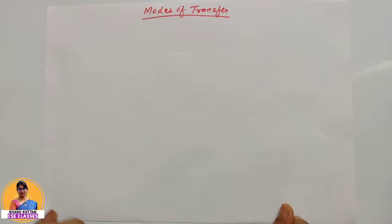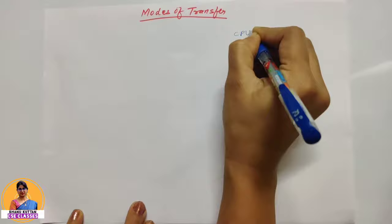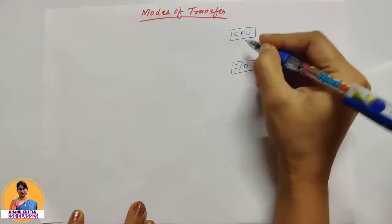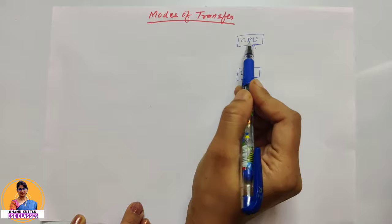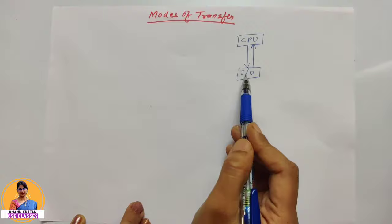Modes of transfers - first of all, we need to clear one point. When CPU and I/O input-output devices data transfer happens, in this case CPU only performs instructions and some data can store in registers. But the ultimate transfer of data to the I/O devices or from the I/O devices, where does it keep? It keeps in memory.